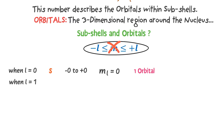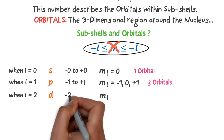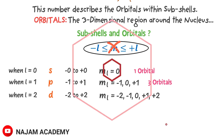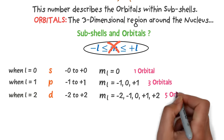When l is equal to one it is p subshell. Go from negative one to positive one: negative one, zero, positive one. Thus when l equals one, ml is equal to negative one, zero, or positive one, and p subshell has three orbitals. When l is equal to two it is d subshell. Go from negative two to positive two: negative two, negative one, zero, positive one, positive two. Thus when l equals two, ml equals negative two, negative one, zero, one and two, and d subshell has five orbitals. When l is equal to three it is f subshell. Go from negative three to positive three: negative three, negative two, negative one, zero, one, two, three. Thus when l equals three, ml equals negative three through positive three, and f subshell has seven orbitals.